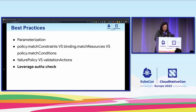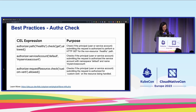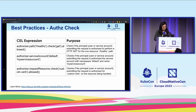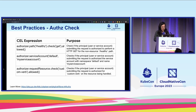The last best practice is the authorization check. We added the ability to perform auth checks for the admission request user through the authorizer variable. For example, you can check if the principal submitting the request is authorized to update certain resources or even a service account. My colleague Joe Betz has written very nice documentation on the capabilities the auth check provides, along with many examples.